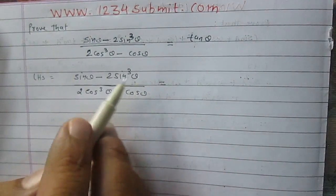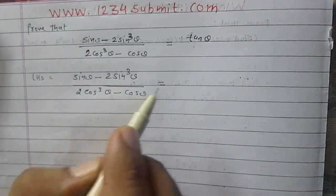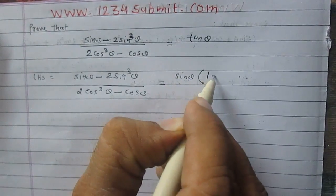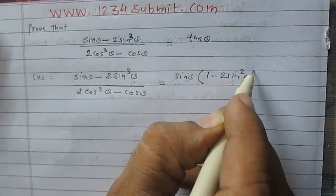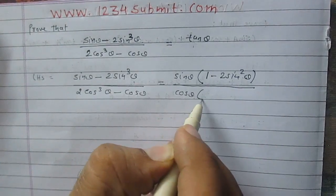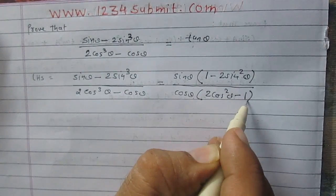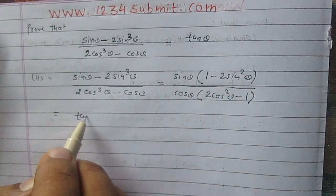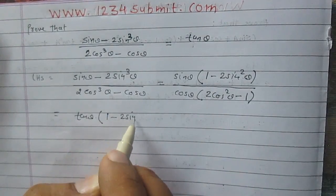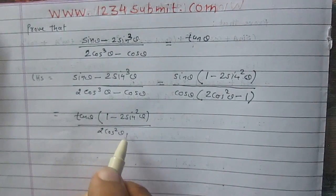We see that sin theta is common in the two terms of the numerator. So we can write the numerator as sin theta multiplied by 1 minus 2 sin square theta. Similarly, the denominator can be written as cos theta multiplied by 2 cos square theta minus 1. So it becomes tan theta multiplied by 1 minus 2 sin square theta upon 2 cos square theta minus 1.